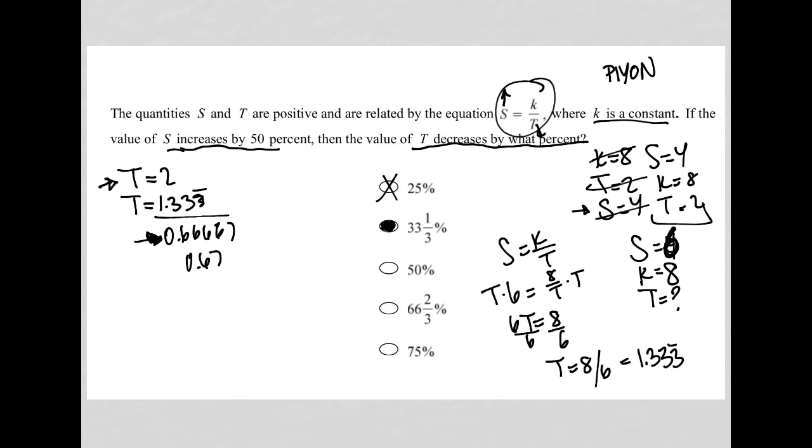Is it 50%? Definitely not. Is it 66 and two-thirds percent? Definitely not. And definitely not 75%. So I'm showing you this because if you're hesitant to do the math, I think the answer choices kind of help you to get to the answer quicker than maybe doing the math even.